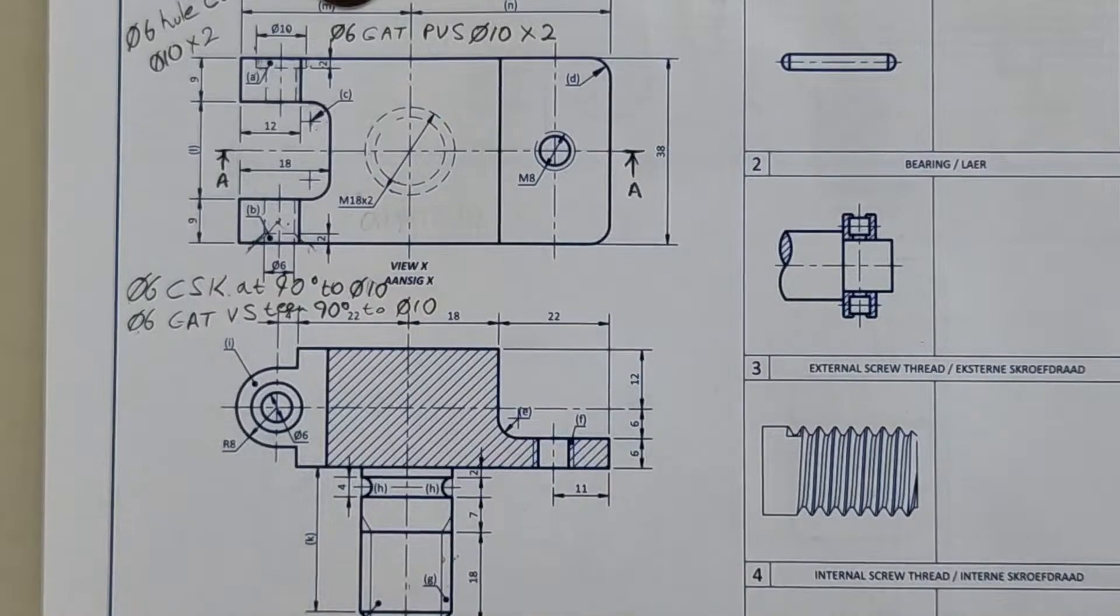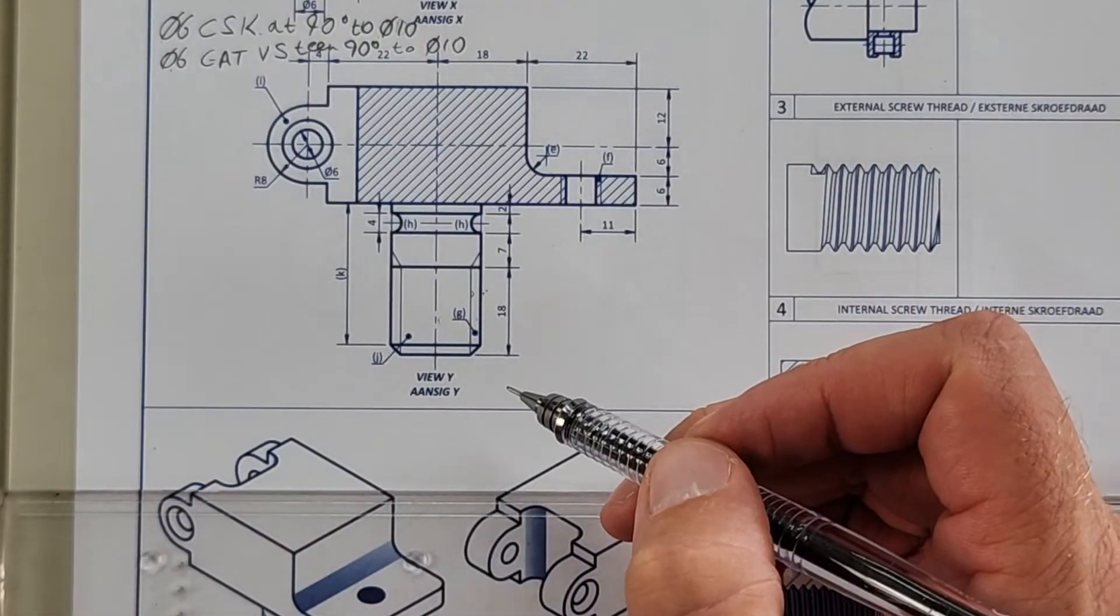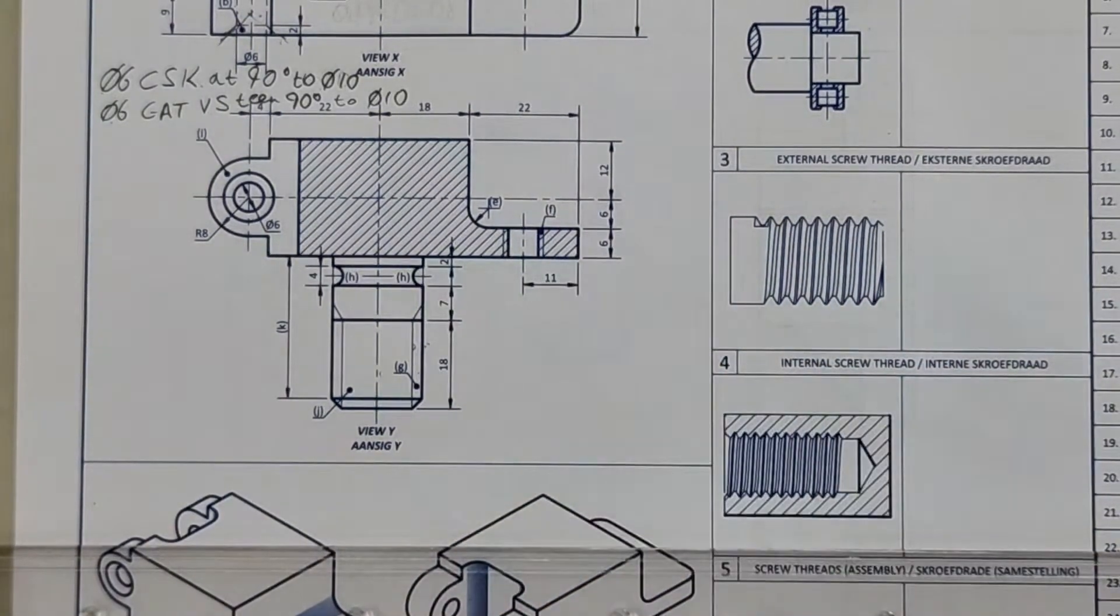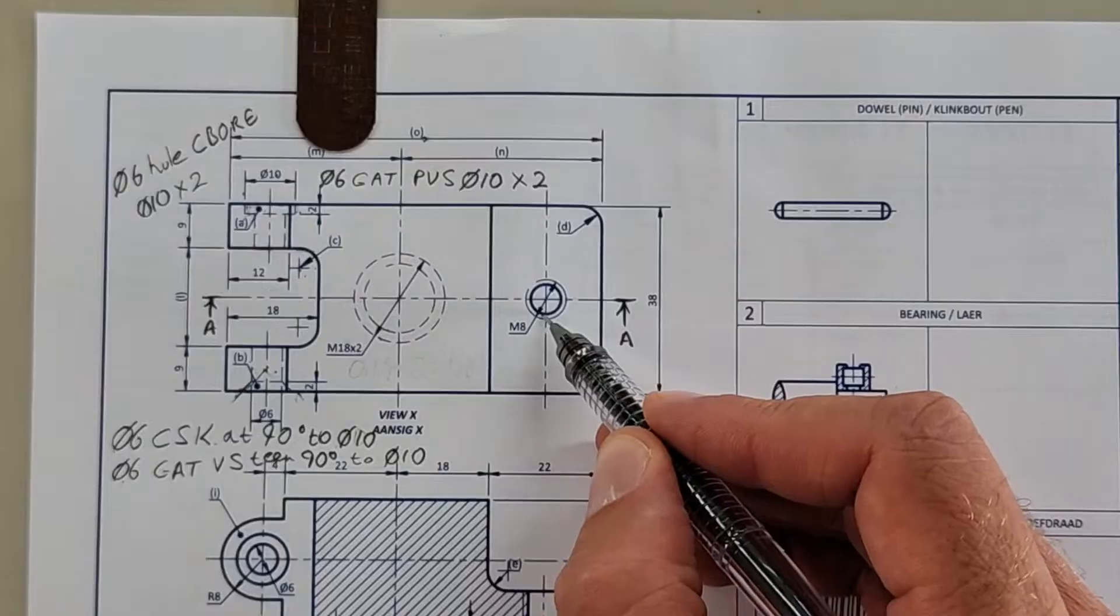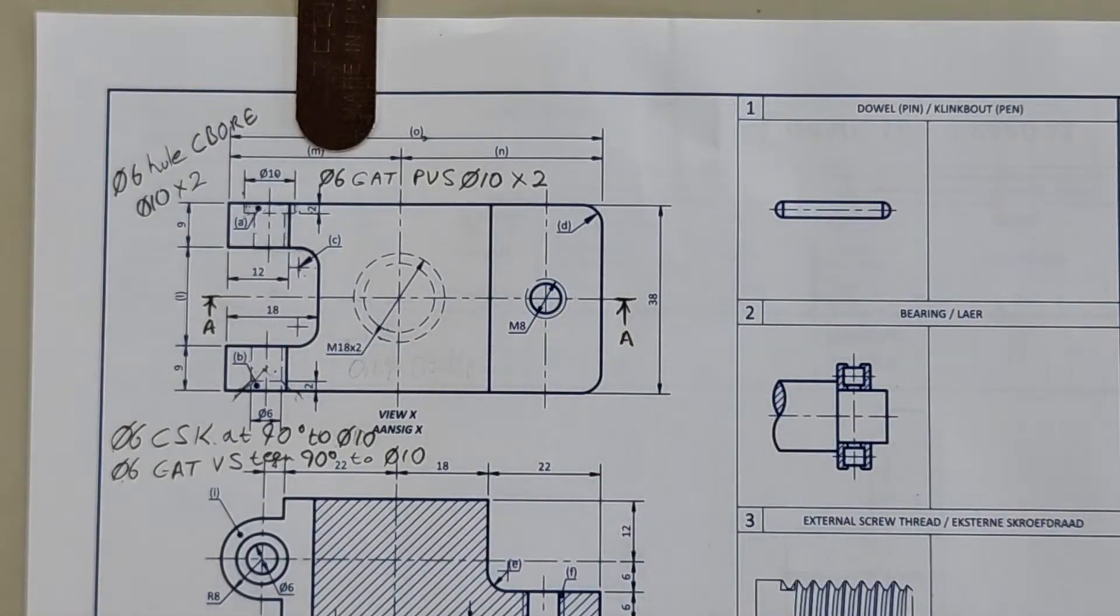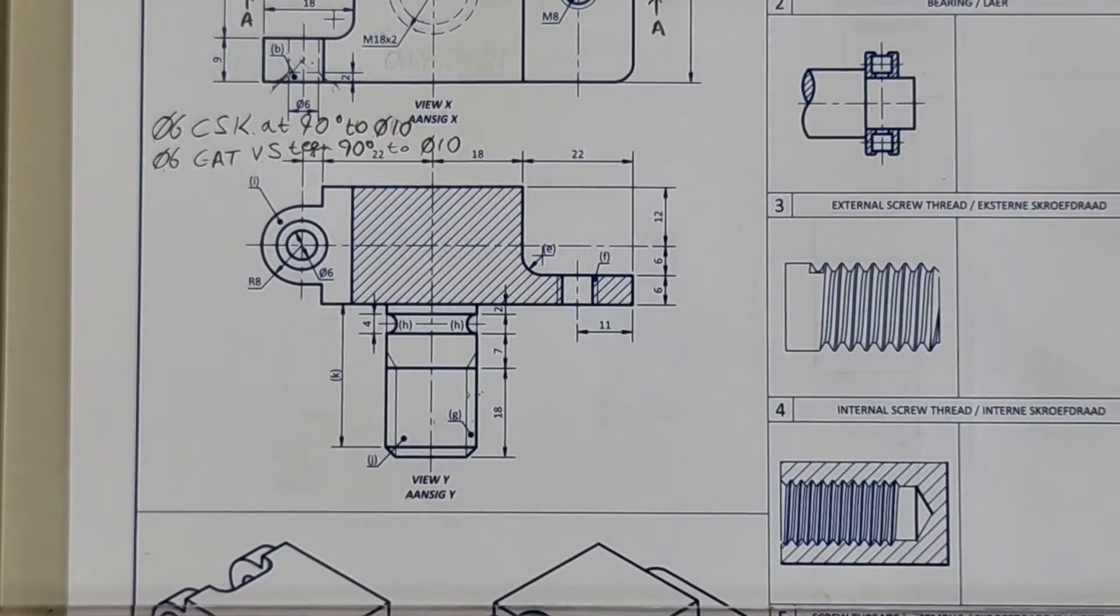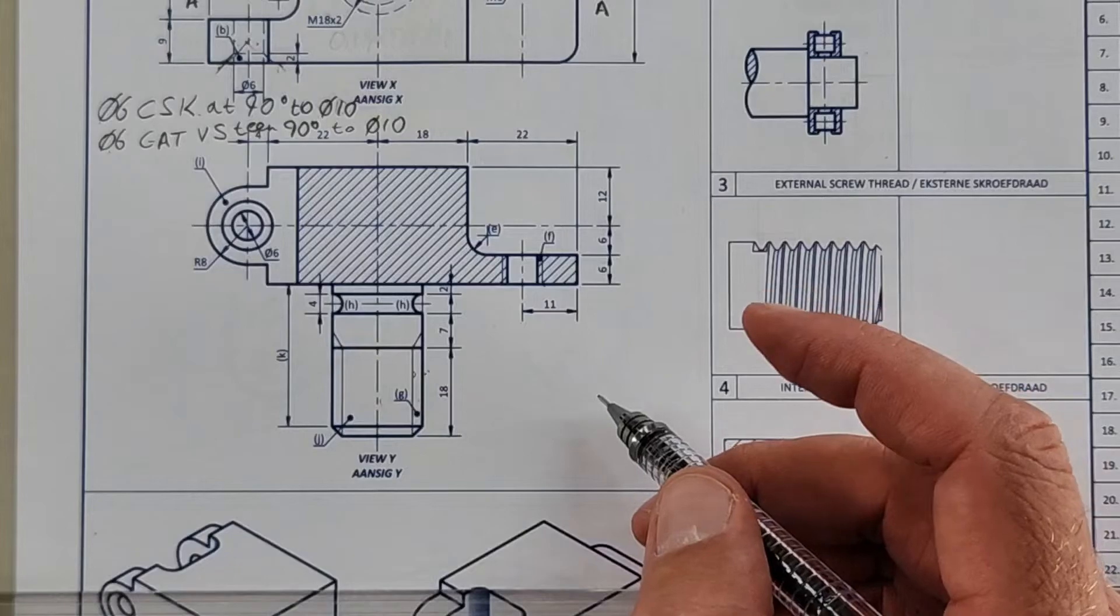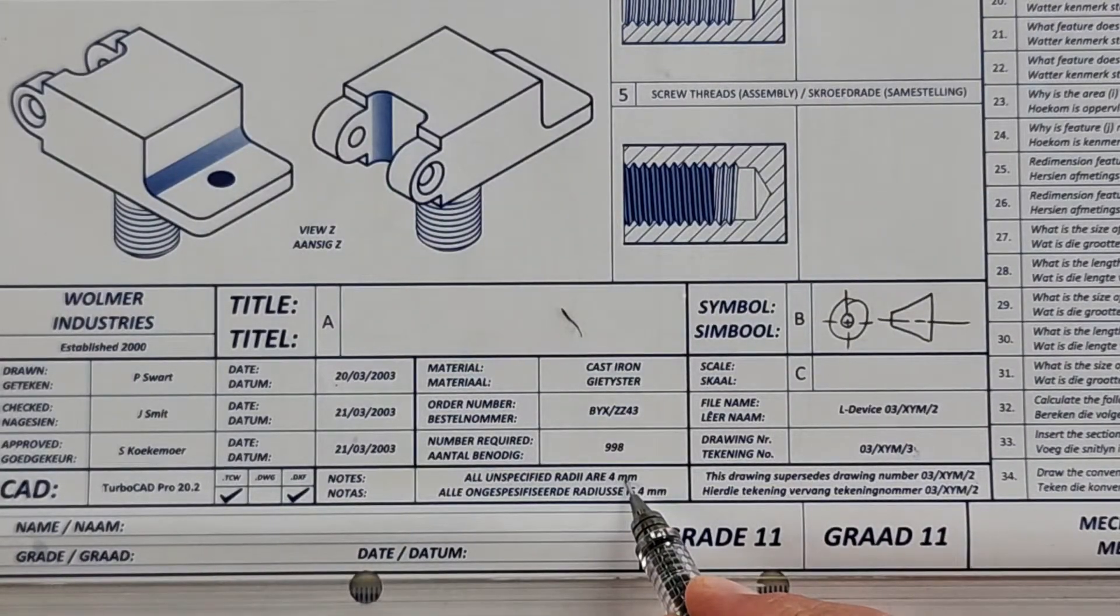What is the length of the external thread? There's the 18. What is the size of the internal thread? That's that F there. Again, if it is not specified, we're going to take that M8 and we're going to times it by 0.1. We have to just double check if it's not specified. What is the length of the internal thread? There it is, the 6mm all the way through, almost finished. What is the size of all fillets and rounds? You can double check here, it says 4mm.